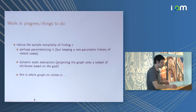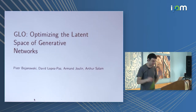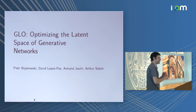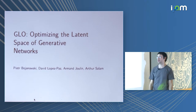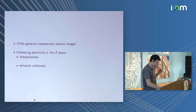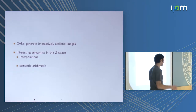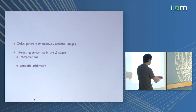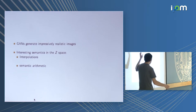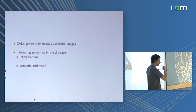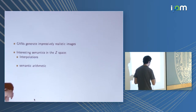Now I'm going to talk about something completely different. This is joint work with Peter Bichinafski, David Lopez-Paz, and Armand Joulin at FAIR. GANs generate really impressively realistic images, and there's this nice Z space where interpolating between two random vectors produces smooth image interpolations. You have semantic arithmetic: man with sunglasses, subtract man, add woman, and you end up with woman with sunglasses.